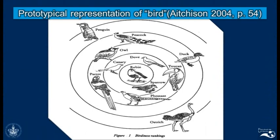Aitchison came up with this prototypical representation of the word bird. When we think of bird, we normally think of this kind of bird first of all, such as a robin, a dove, a canary, or a sparrow. Then there are some other kinds of birds that probably do not come to our mind very often when we think of the word bird, such as a toucan or an owl. And then later, of course, we will have ducks. The last examples that represent the word bird will be a penguin and an ostrich — these are the last examples we think of when we analyze the meaning of the word bird. A robin is a prototypical example of the concept of bird.